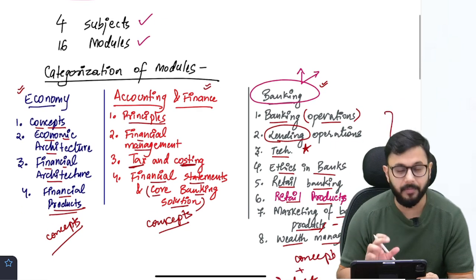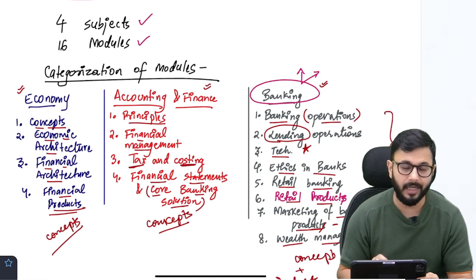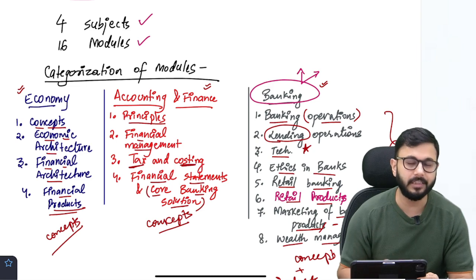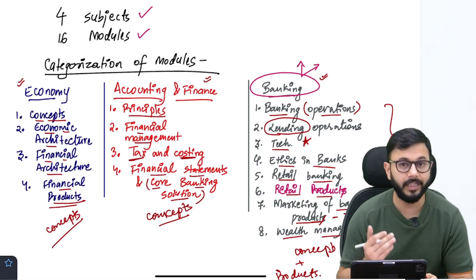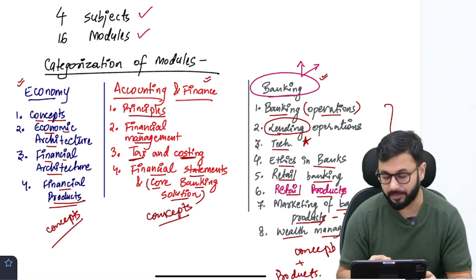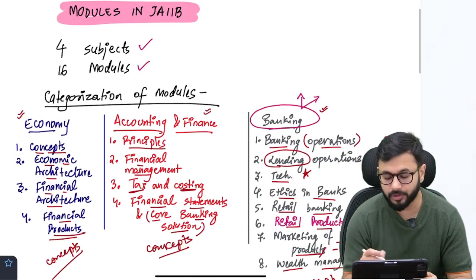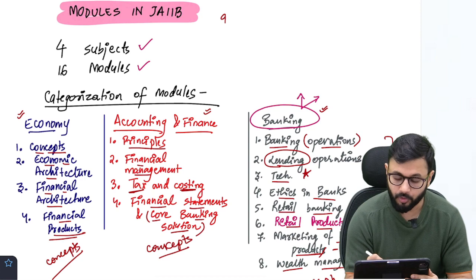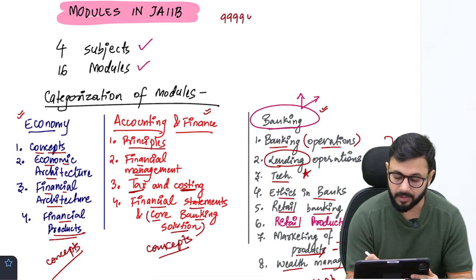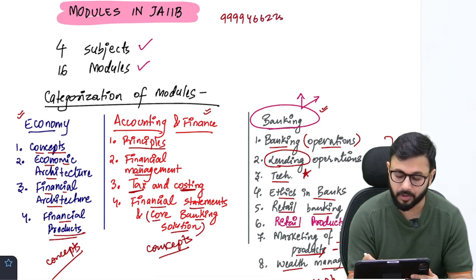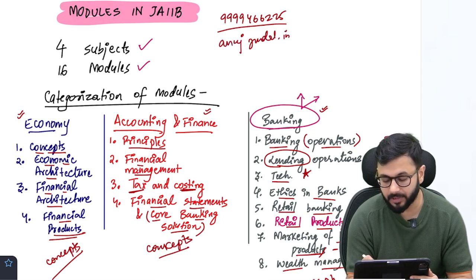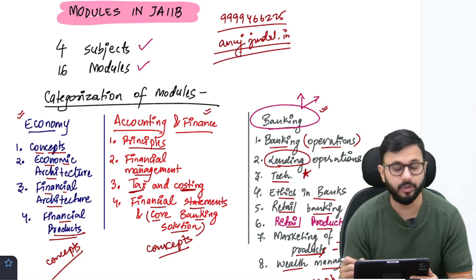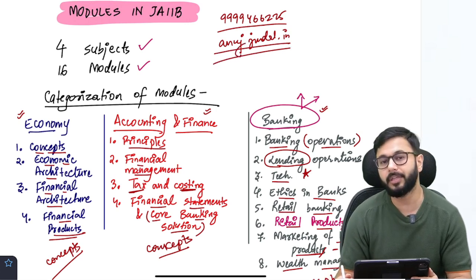If you are able to memorize these 16 modules automatically, it will become much easier for you to understand how do you go forward, how do you proceed with the actual preparation of the examination. If you have any doubts regarding JAIIB, you can reach out to me on 9999-466-225. The name of my website is anujindal.in. You can also go to the website and research whatever you need to know about JAIIB and CAIIB examination.